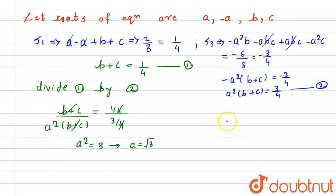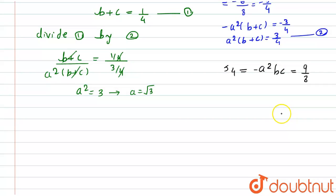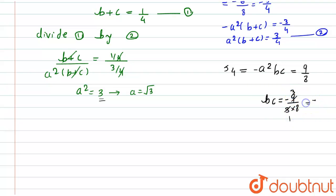Now we apply the fourth property, S4: minus a² times b times c, which equals the constant term divided by the leading coefficient, that is 9 divided by 8. From here, bc equals (9/8) divided by a², and since a² equals 3, we get bc equals 9 divided by 24, which simplifies to minus 3 divided by 8. Let this be equation number 3.